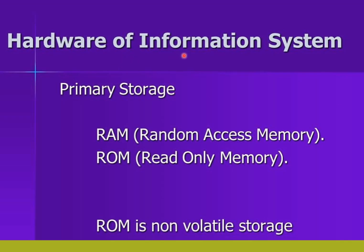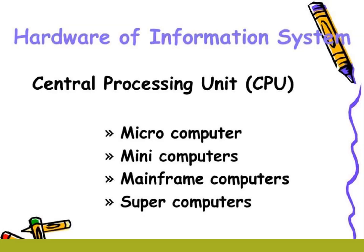Primary storage of hardware includes RAM, random access memory, and ROM, read-only memory. ROM is non-volatile storage. The central processing unit, CPU, is found in microcomputers, mini computers, mainframe computers, and supercomputers.